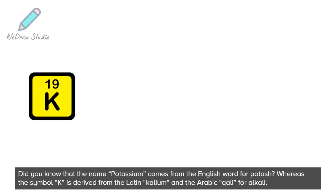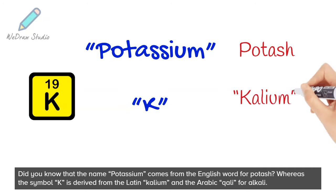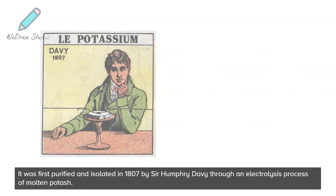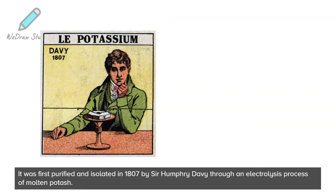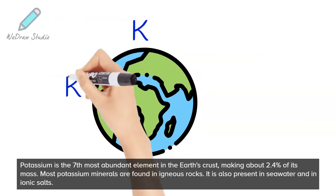Did you know that the name potassium comes from the English word for potash, whereas the symbol K is derived from the Latin 'kalium' and the Arabic 'qali' for alkali? It was first purified and isolated in 1807 by Sir Humphry Davy through an electrolysis process of molten potash.